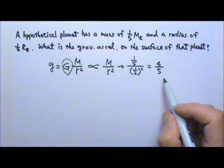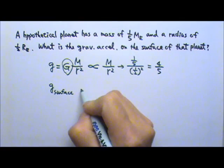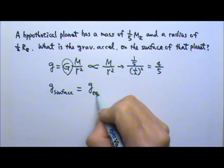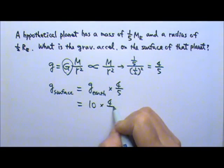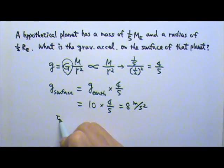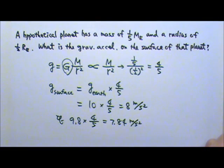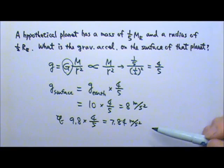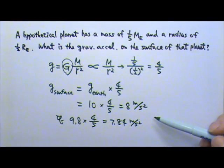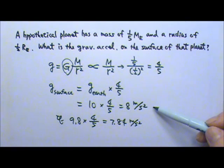4/5 is not the answer — it is the factor by which g changes. The gravitational acceleration on the surface of the hypothetical planet equals the g on Earth's surface times this factor. Using g = 10, we get 8 m/s². Using g = 9.8, we get 7.84 m/s². Either answer is acceptable on the AP exam. For multiple-choice questions, just pick the answer closest to yours — the choices should be different enough that there is no ambiguity, whether you use g = 9.8 or 10 m/s².